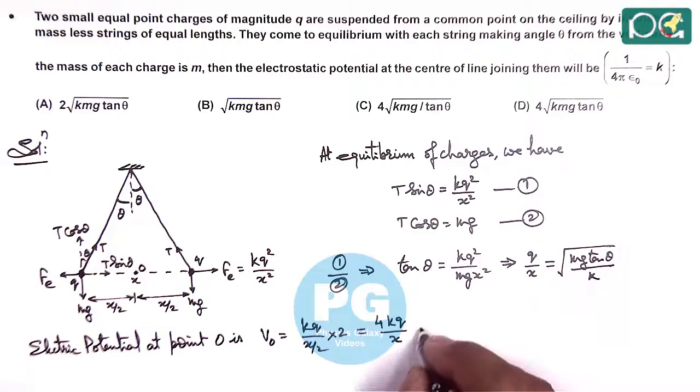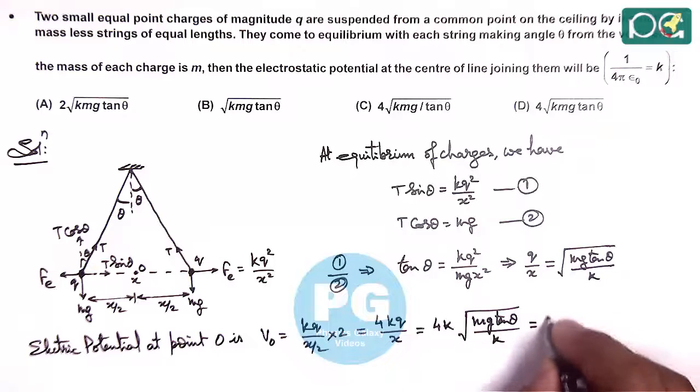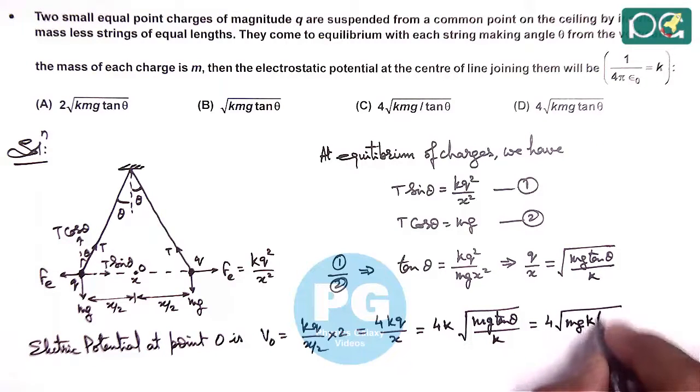If we substitute this value, it gives 4K multiplied by the square root of Mg tan theta by K, which gives 4 times the square root of MgK tan theta. You can see it matches with option D, so the answer to this question is option D.